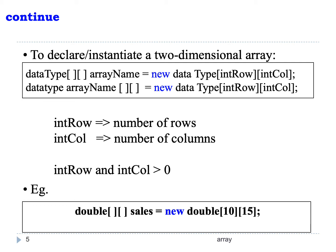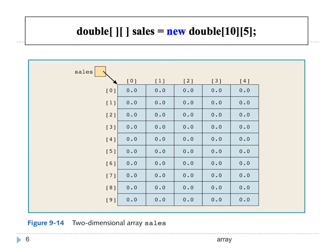Similar to what we can write in a one-dimensional array, we can have the square brackets after the array name. Apart from having rows and columns, two-dimensional array is similar to one-dimensional array. All the elements in a two-dimensional array also have default values — for type double the default value is 0.0, and for int the default value is 0. This table shows 10 rows numbered index 0 until 9, and 5 columns numbered index 0 until 4.